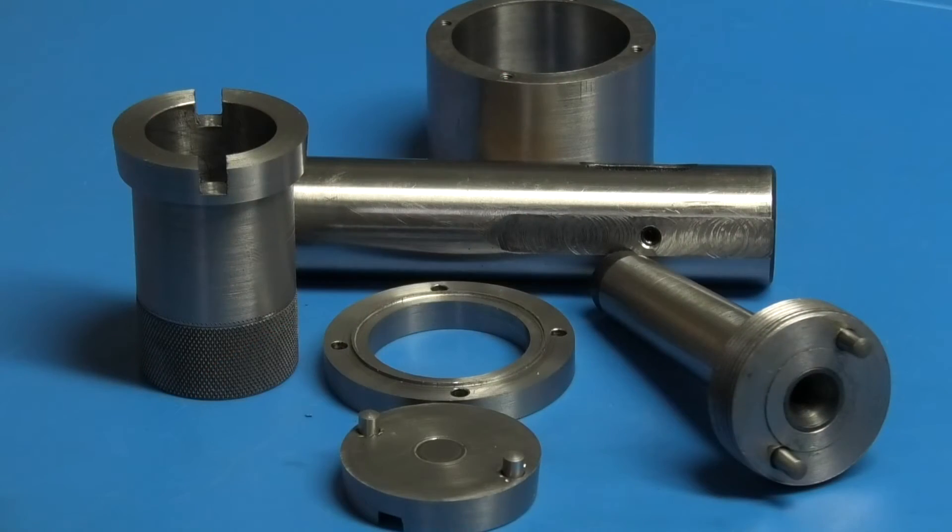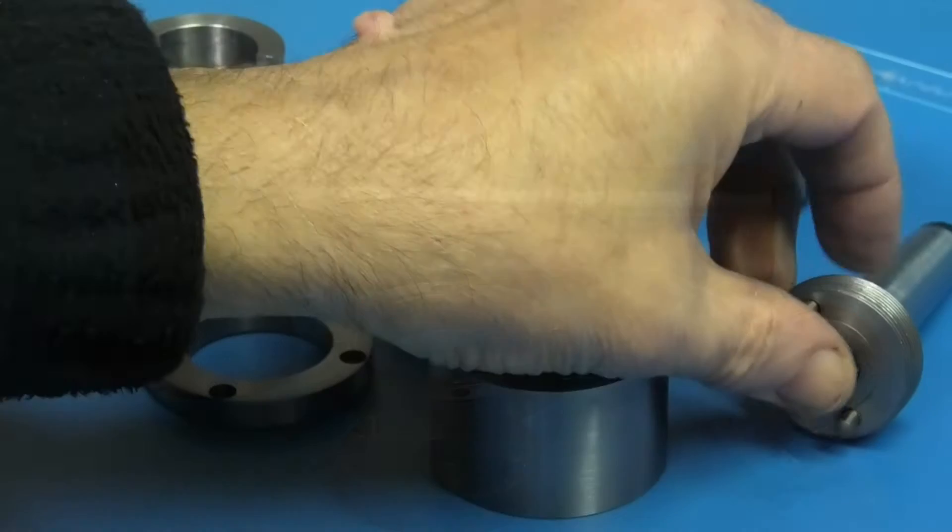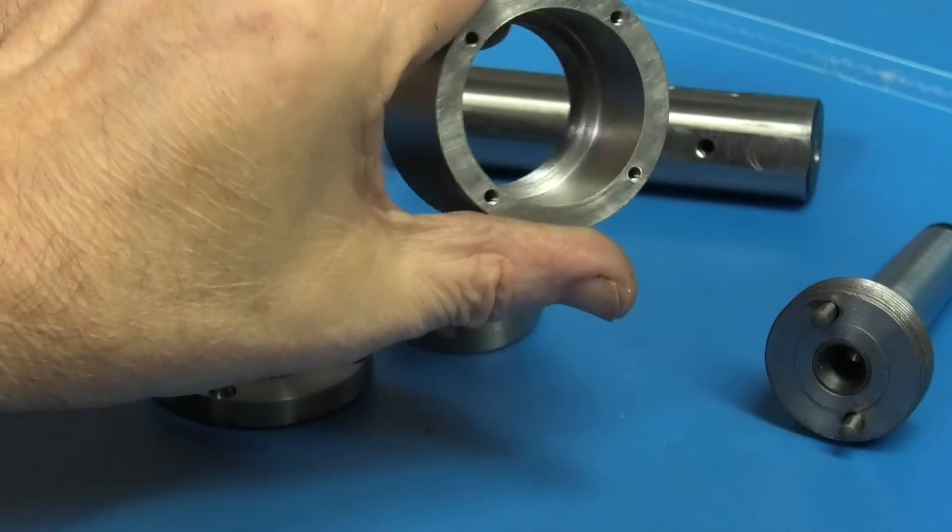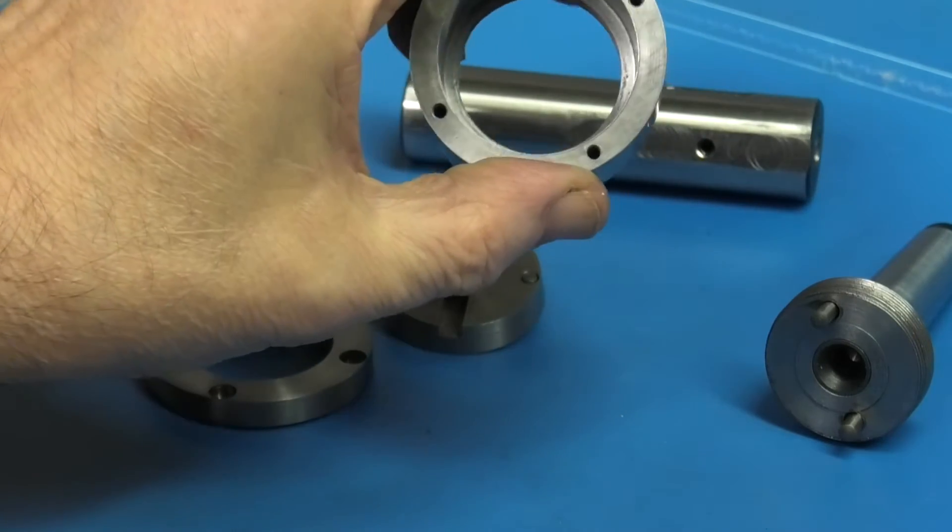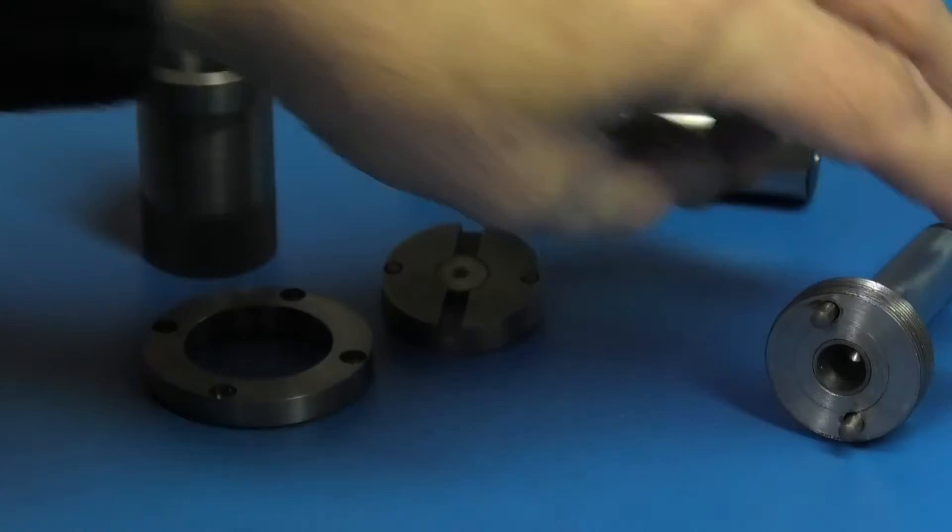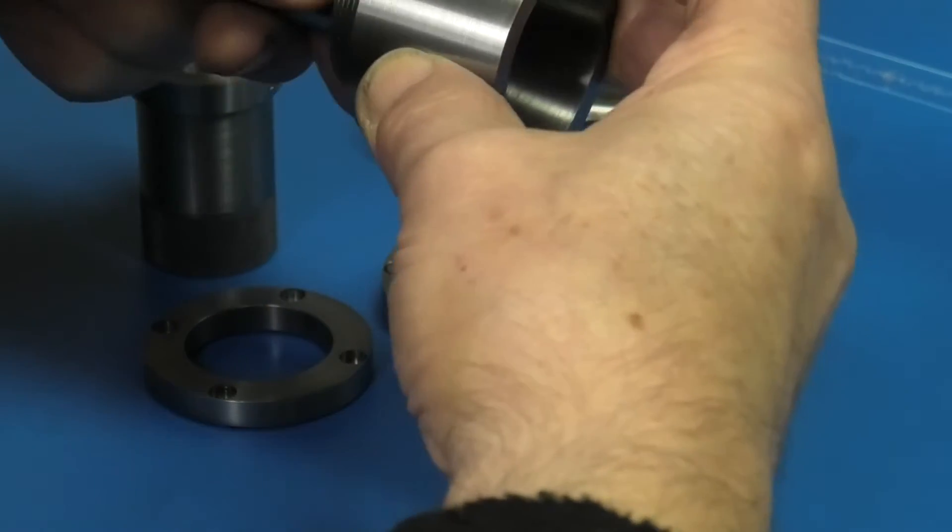These are all the finished parts for the floating reamer, so now we'll start the assembly. The pins have been fitted into position, and we'll start by taking the Morse taper adapter and the housing. This is one of the first pieces we made with the screw threading, and that screws onto the Morse taper arbor.